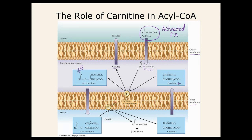The acylcarnitine passes through the inner membrane to the other side, where the reverse process happens: coenzyme A comes back in and reattaches to the fatty acid so it's reactivated, and carnitine is reformed. Carnitine then goes back through the inner membrane to pick up another molecule — it picks up the fatty acid, transports it through the inner membrane, and allows the fatty acid to go back onto coenzyme A.